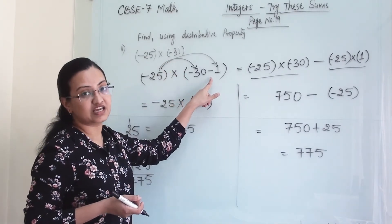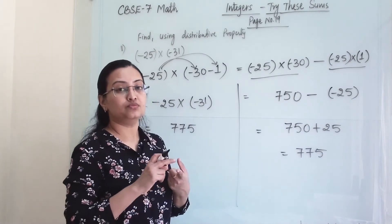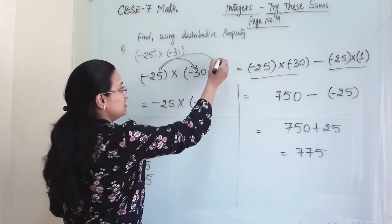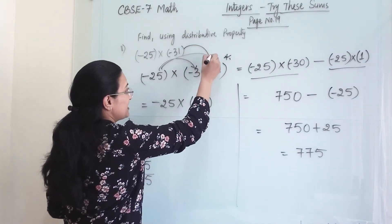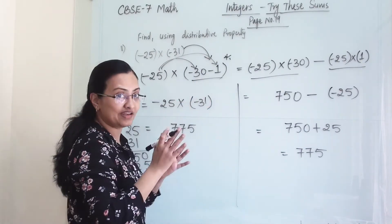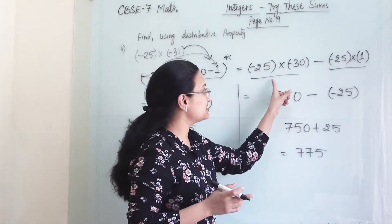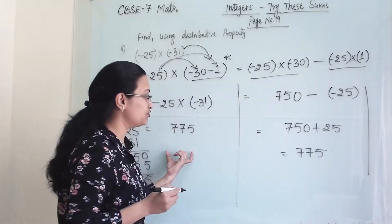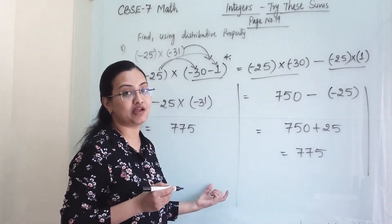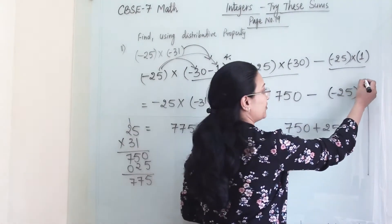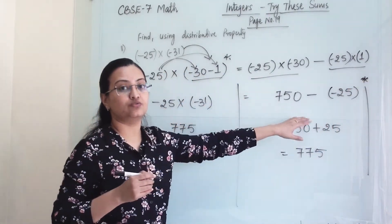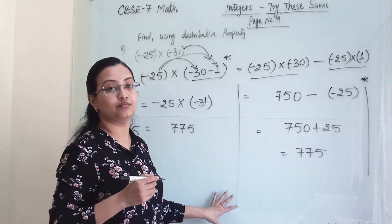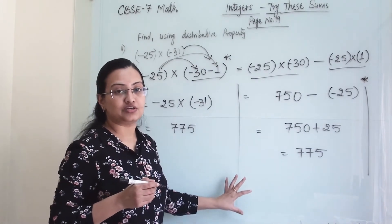In this kind of sum you have to check two things: whether you have expanded the number correctly — that is the first thing — and then whether you have handled the minus and plus signs correctly. Only then will your answer from both sides match. If not, check these two points, and once you correct them you will get the same answer, meaning your multiplication and calculation are correct.